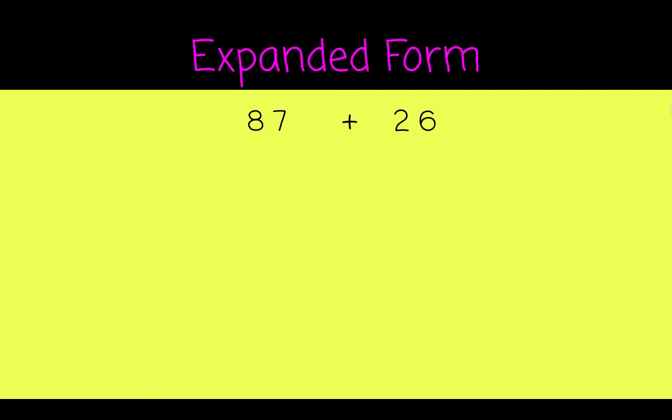87 plus 26. This 8 is in the tens column. In the tens column it represents 8 tens, or 80. Then we have 7. 2 is 20 because it's in the tens column, and that's 6. Remember your addition symbol.